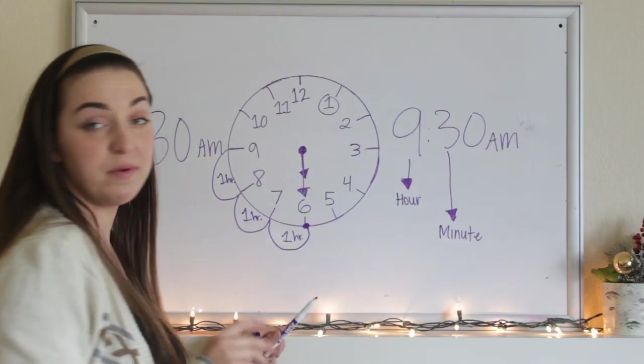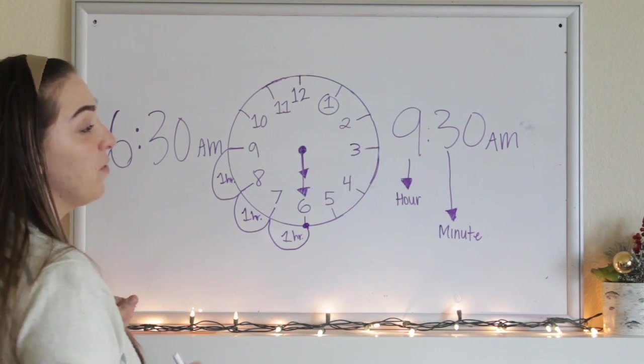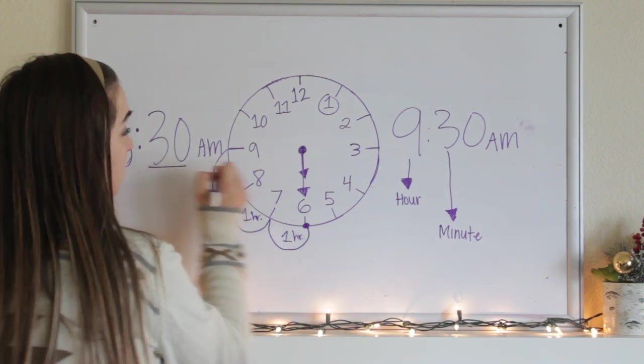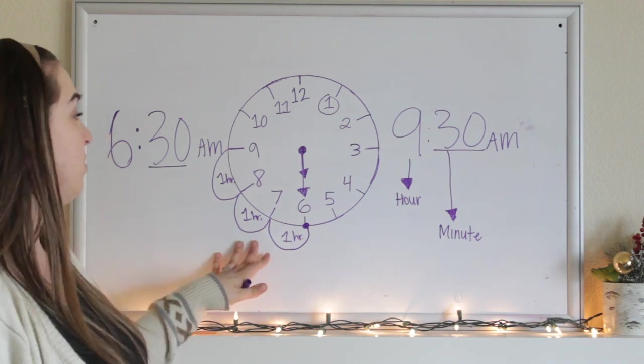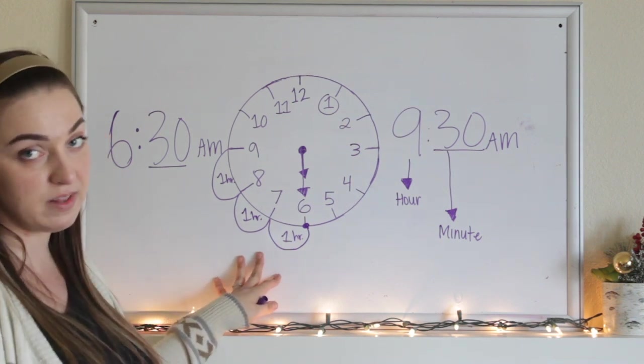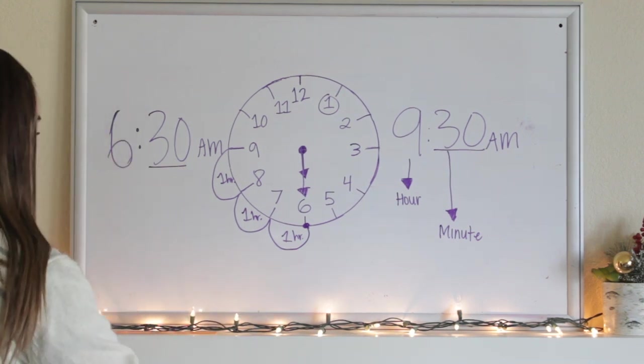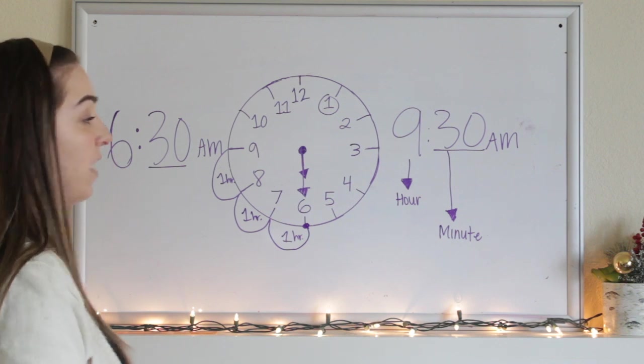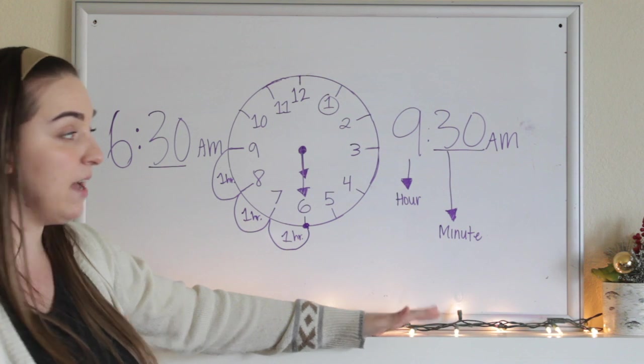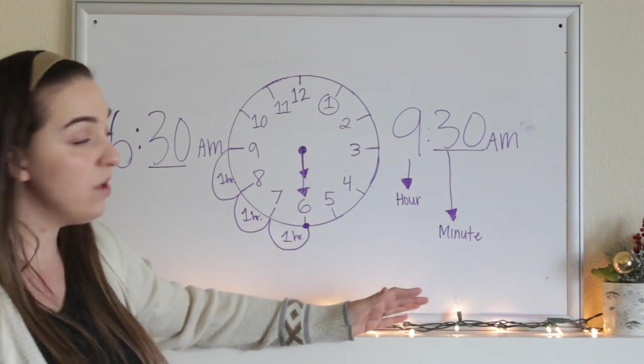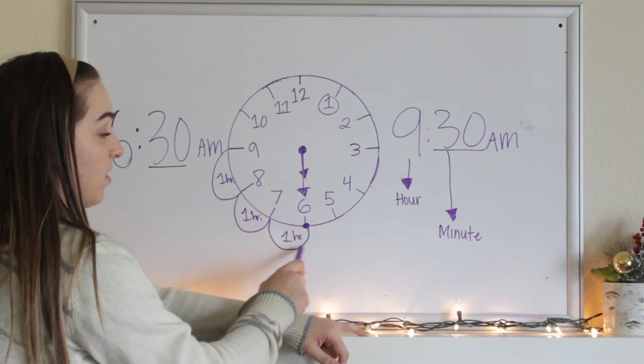I hope you came up with the number 3 because that's how many hours are in between 6:30 and 9:30. We can see that the minutes are the exact same on both of the numbers. So we know that the minutes don't change. We don't need to find how many minutes are in between these because we already have how many minutes are there. So we have three even hours in between 6:30 and 9:30 and this is a good way that we can find elapsed time. We can put the time that we begin at on the clock and we can start counting over.